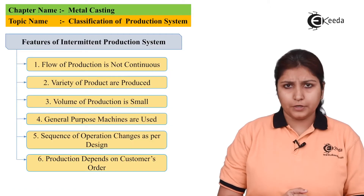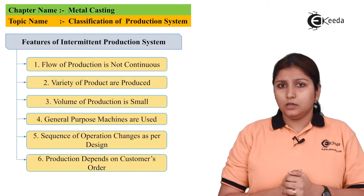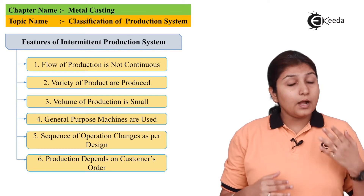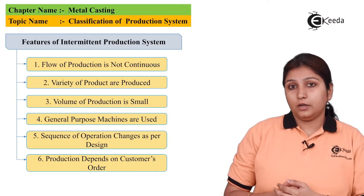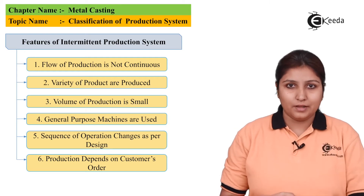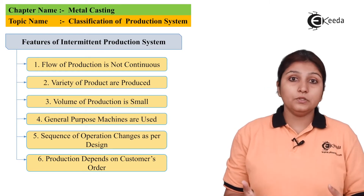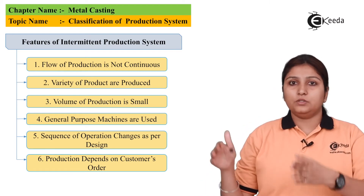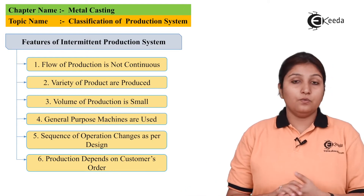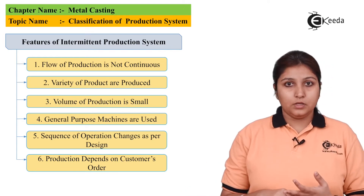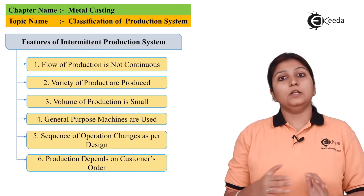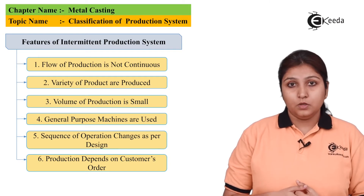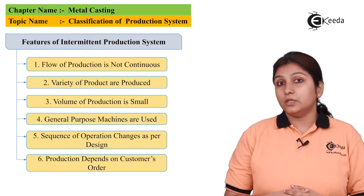These are some general features of an intermediate production system. Volume is not fixed; production is not continuous. You can't predict or promise the customer the same product again, as the customer also doesn't always give you the same order. Production line is stopped and has to be started again, so you can't promise to deliver the same size, same shape order again and again. Volume is not fixed, production is not fixed, the same type of object cannot be made. Large variation can be seen in the object, and the sequence of operations is not the same.